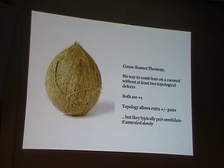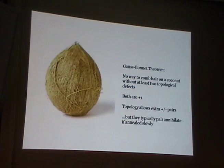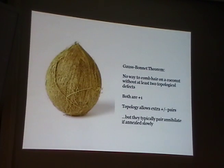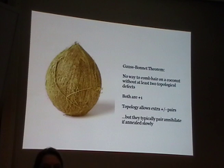Remember the Star Trek episode 'The Trouble with Tribbles'? A Tribble is a furry, round creature. Imagine combing the hair on a Tribble — can you comb it so there are no special points? You can comb it with a special point at the top and one at the bottom, or going east everywhere. You'd still have two special points. You can bring them together to make one plus-two defect.